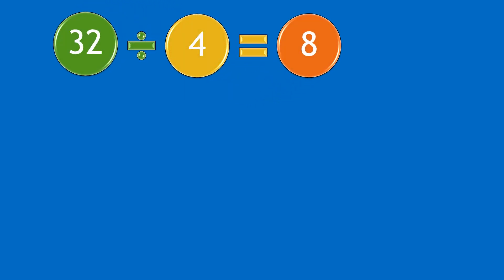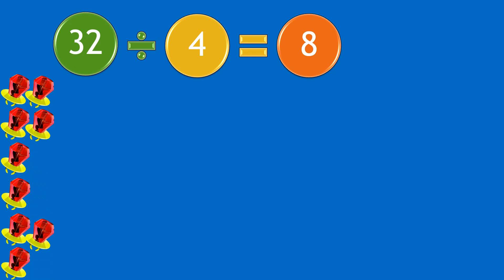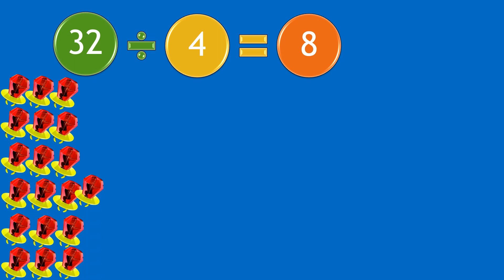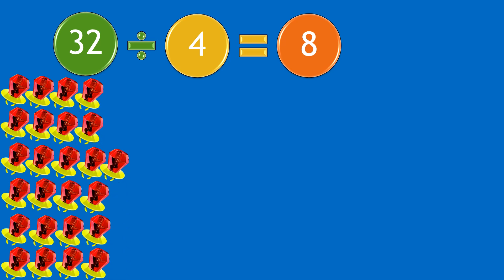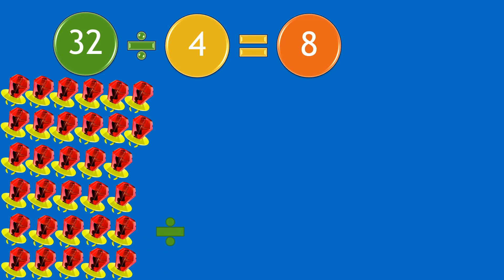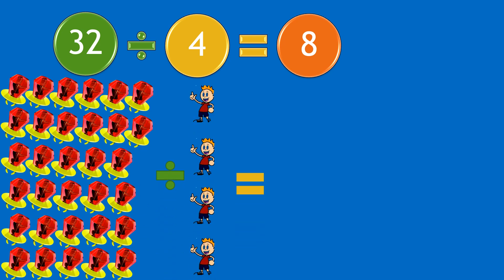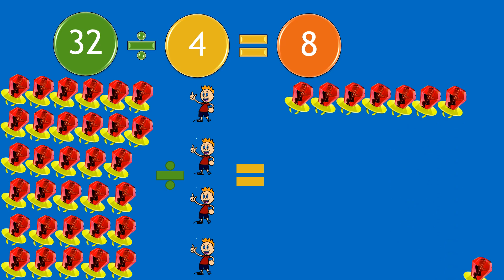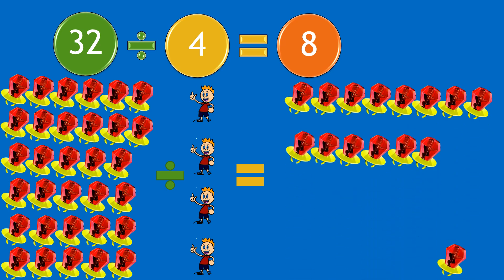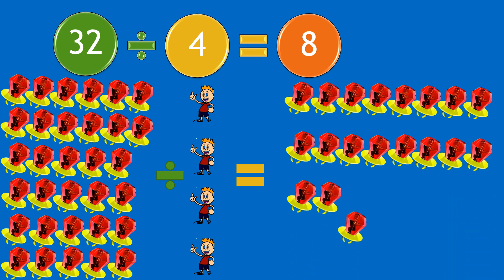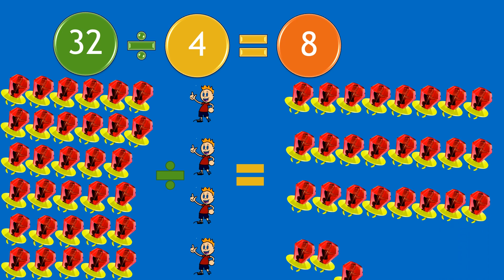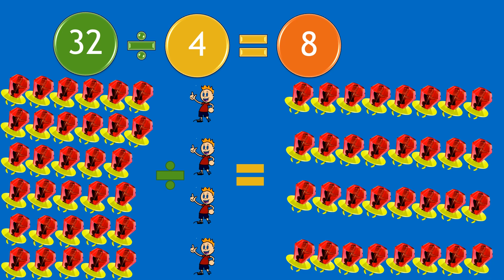Moving on to our next question: 32 divided by 4 equals 8. If you have 32 ring pops and divide them by four boys, each boy will receive eight ring pops. Yep, each boy has received their eight ring pops.